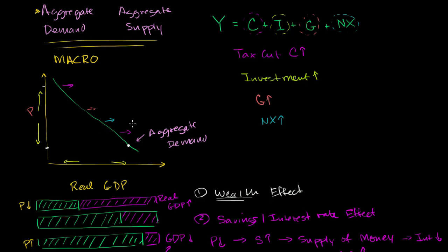So to really think about how aggregate demand shifts, you really just have to think about the components of GDP and how different macro things might impact those components. Those will tell you whether at a given level of prices of goods and services in the economy, it'll shift demand to the right or to the left.